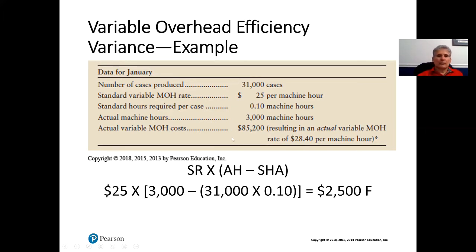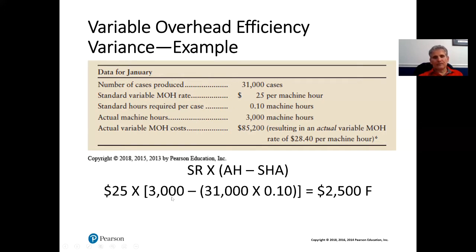Then we compute the overhead efficiency variance using the formula: standard rate multiplied by (actual hours minus standard hours allowed). The standard rate is $25. The actual hours were 3,000 machine hours. The standard hours allowed: since standard is 0.10 hours per case and we produced 31,000 cases, that's 3,100 hours. So: $25 × (3,000 − 3,100) = $25 × (−100) = $2,500 favorable variance.